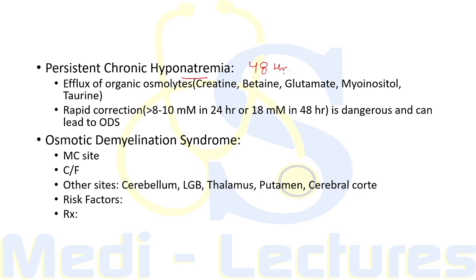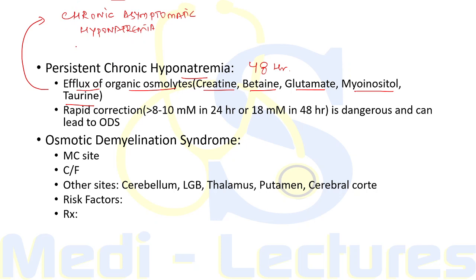Hyponatremia lasting at least 48 hours is known as persistent chronic hyponatremia. The brain adapts by efflux of organic osmolytes including creatinine, betaine, glutamate, myo-inositol, and taurine from the intracellular compartment to the ECF to avoid cerebral edema. Even with this adaptation, patients can have vomiting, confusion, and seizures. If the patient is asymptomatic, this is chronic asymptomatic hyponatremia. These patients still require treatment because of increased risk of falls, bony fractures due to neurological dysfunction, and hyponatremia-associated reduction in bone density.